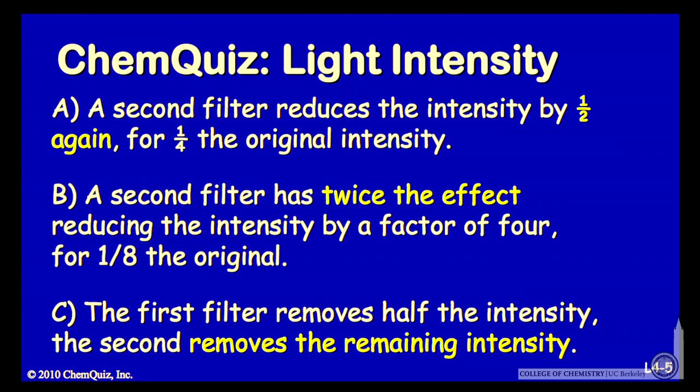Or option C: the first filter removes half the intensity, so the second removes the remaining intensity, giving you zero intensity. Think about those three possibilities and make a selection.